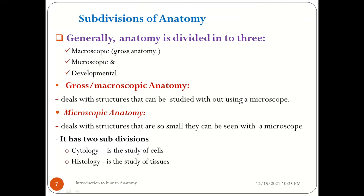Macroscopic anatomy studies structures that can be studied without using a microscope — structures we can see with the naked eye, meaning we can inspect and palpate them using our hands. Microscopic anatomy, on the other hand, deals with structures that are too small to be seen with the naked eye.